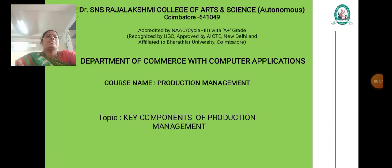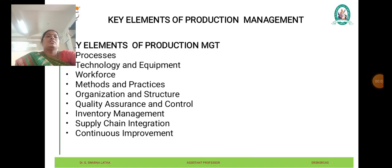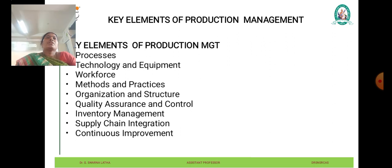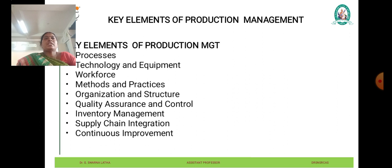We are going to see the key components of production management. A production system refers to a set of interconnected processes, resources, and activities involved in transforming inputs into outputs to meet customer demand. It encompasses various elements including technology, equipment, people, methods, and organizational structures working together to achieve production objectives efficiently and effectively.